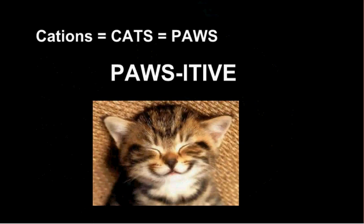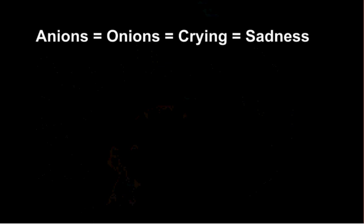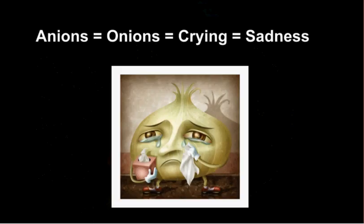So next time you think of cations, think of 'cat ions' — think of cats and their paws — and you'll know that they are positive. What about anions? When I think of anions, I think of onions, and onions lead to crying, and crying equals sadness.